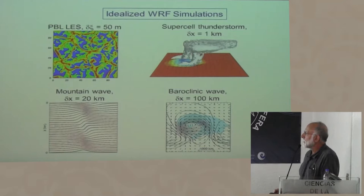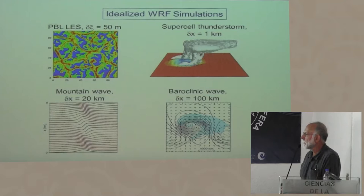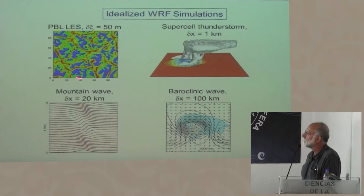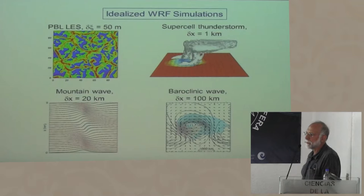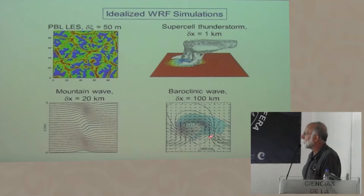The WRF — Weather Research and Forecasting model — was developed at NCAR with wide university and government collaboration, so that if you increase resolution you can do idealized simulation. This is 50-meter resolution — a supercell done in this type of form simulation. Mountain waves need enough resolution to simulate the most important scales in a mountain range, all the way up to scales pertinent to synoptic scale weather systems like baroclinic waves. There's an example of a simulation of a baroclinic wave cyclone.